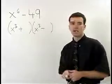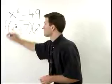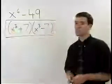The factors of 49 that are the same are 7 and 7. And that's all there is to it.